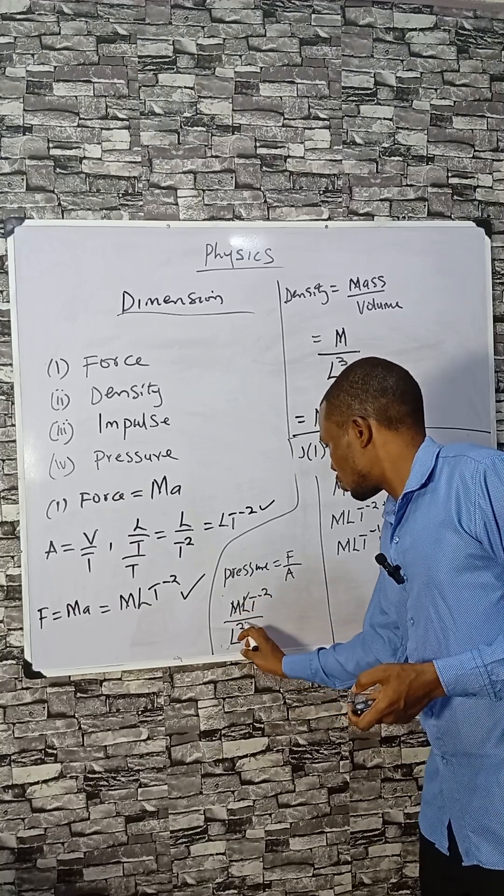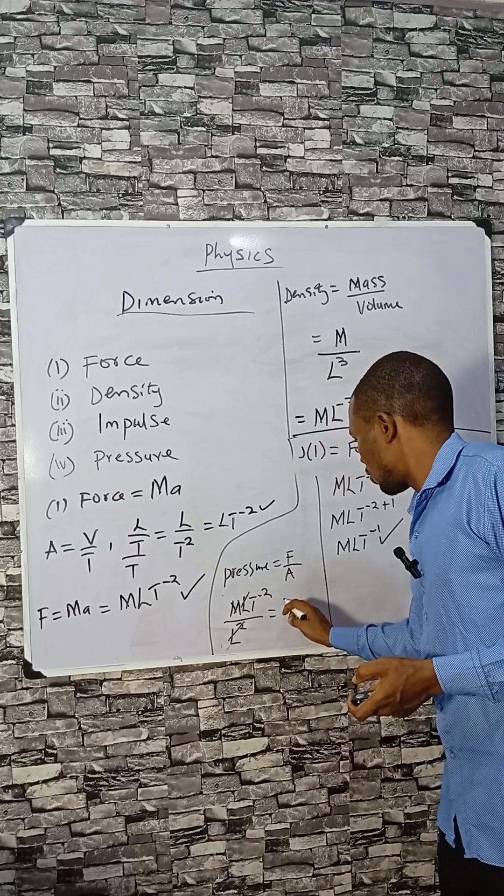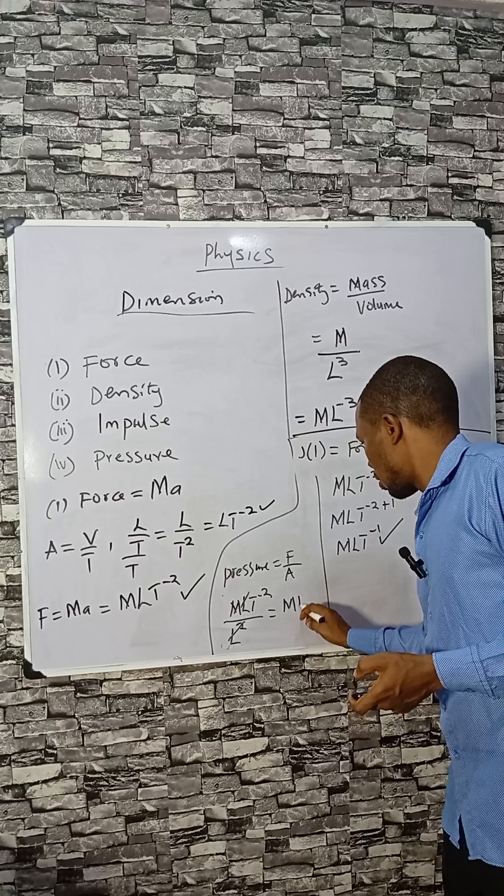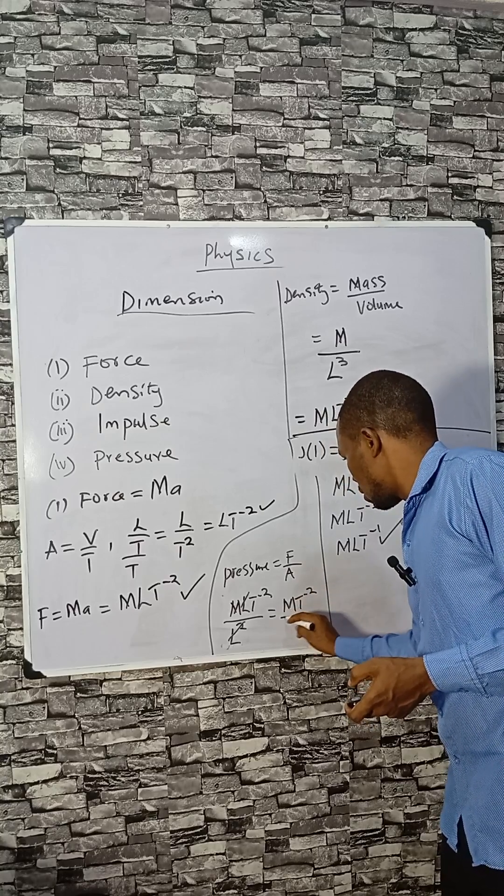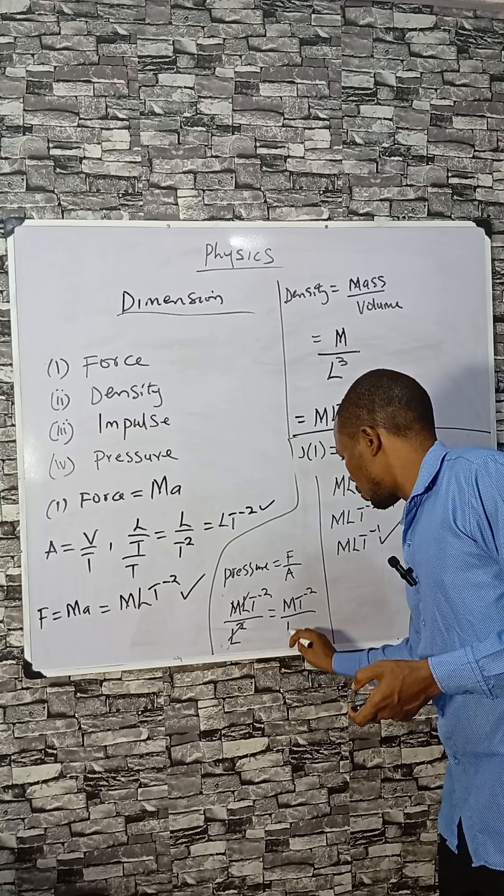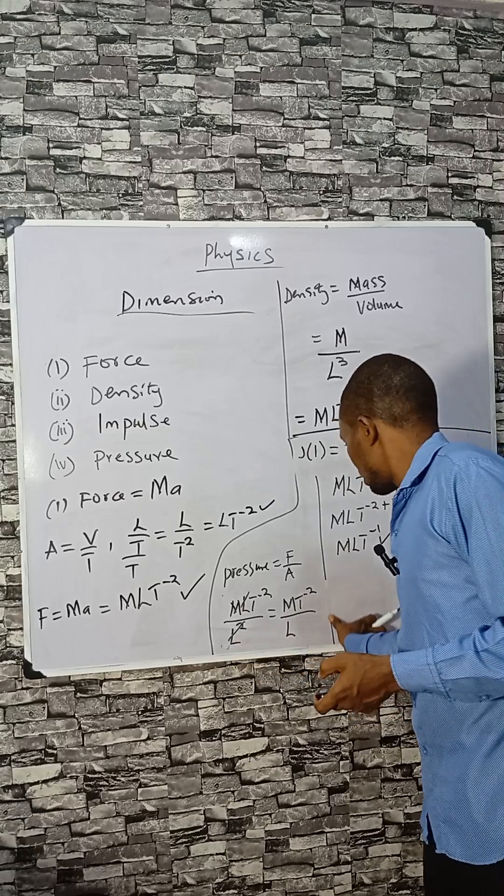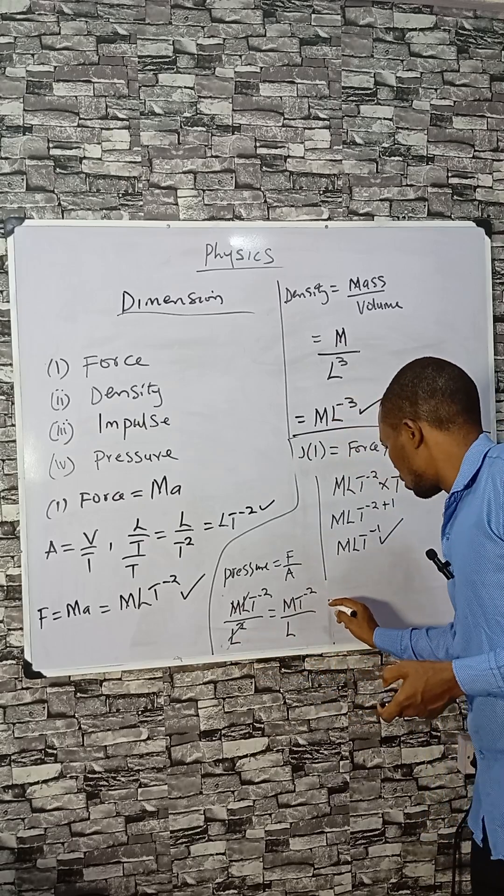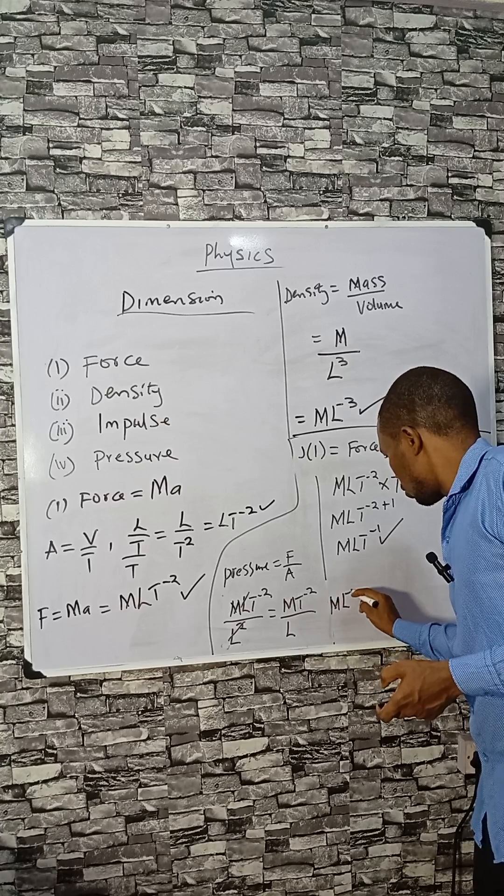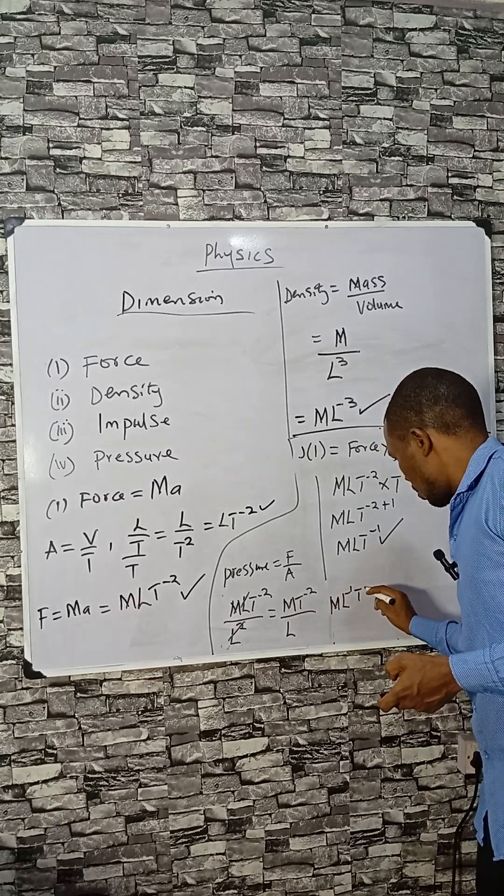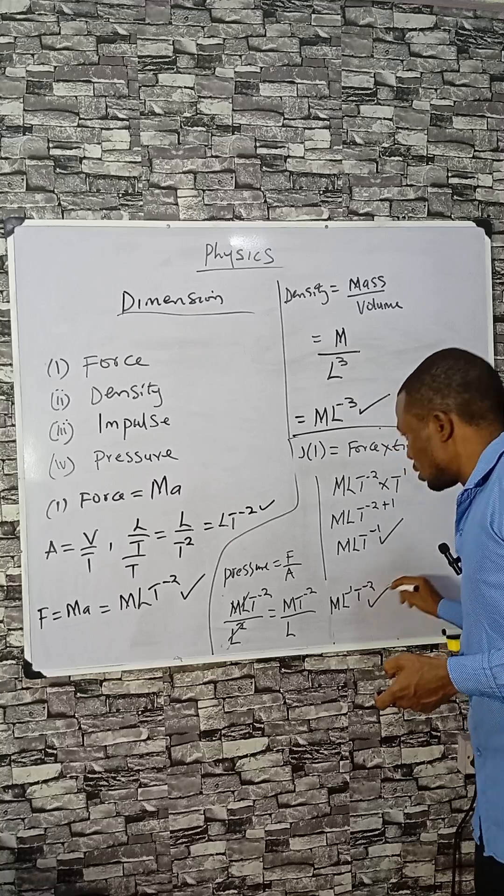One here can cancel here. You have M L T minus two divided by L squared. So when this L goes up, that will be M L minus one, then T minus two. This is the dimension for pressure.